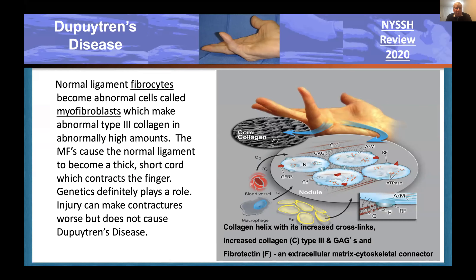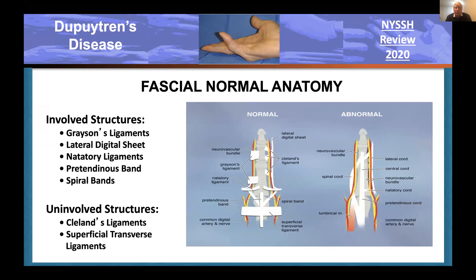Genetics plays a role. Injury can make contractures worse but probably doesn't cause the contracture, although this has been debated for a century. To understand this disorder, you need to start by understanding the normal and abnormal ligaments.